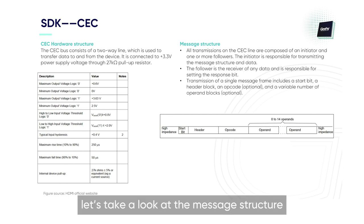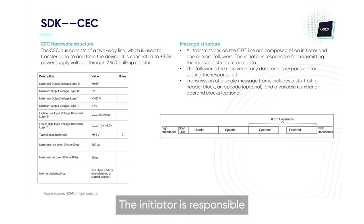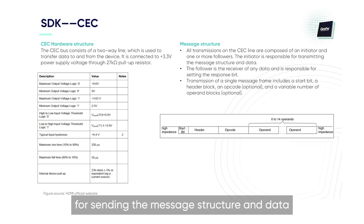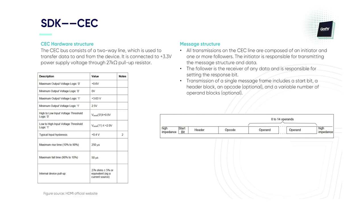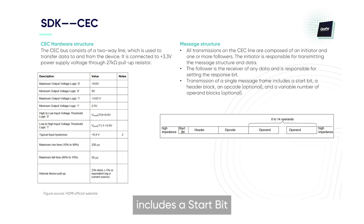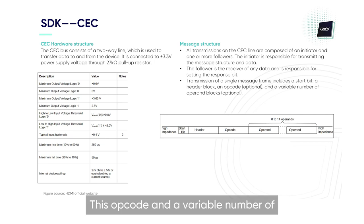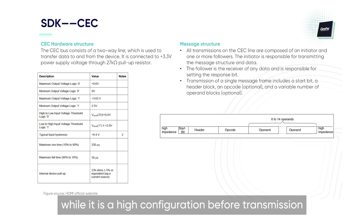Next, let's take a look at the message structure. All transmissions on the CEC line are composed of one initiator and one or more followers. The initiator is responsible for sending the message structure and data, while the follower is the receiver of any data and is responsible for setting the response bit. The transmission of a single message frame includes a start bit, a header block, and an opcode. The opcode and a variable number of operand blocks are optional and finally transmitted, while it is a high configuration before transmission.